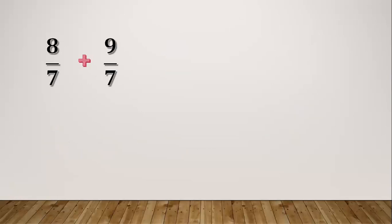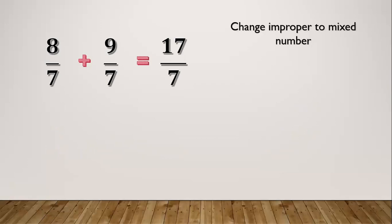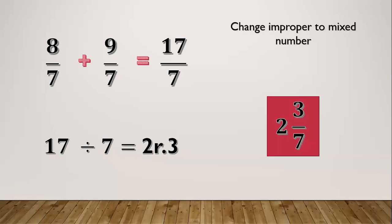Another example: eight sevenths plus nine sevenths. Eight plus nine equals seventeen. Copy the denominator which is seven, giving seventeen over seven. Change the improper fraction to a mixed number. Seventeen divided by seven equals two remainder three. Three is our numerator and two is our whole number, so our final answer is two and three sevenths.